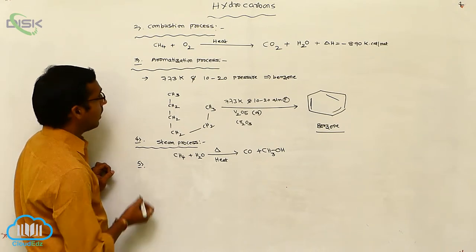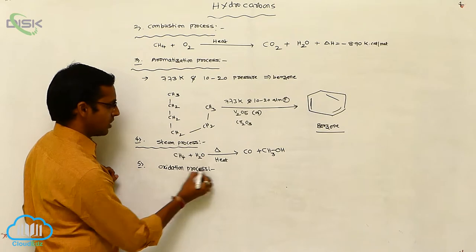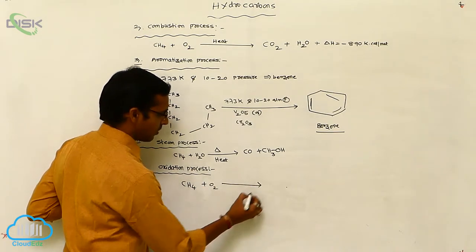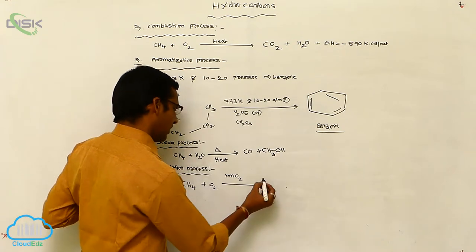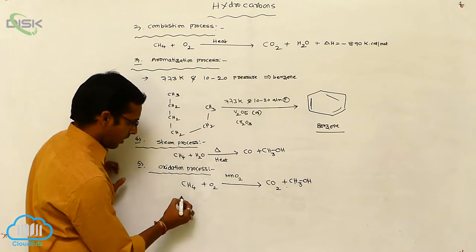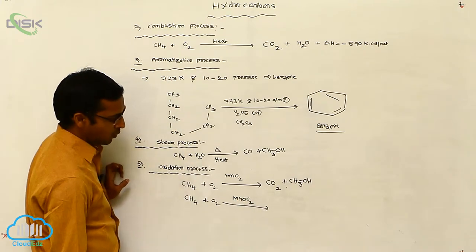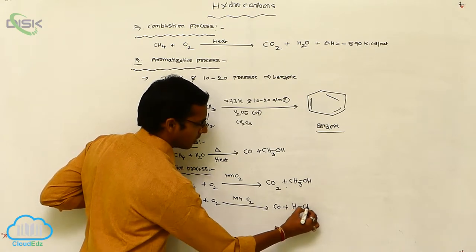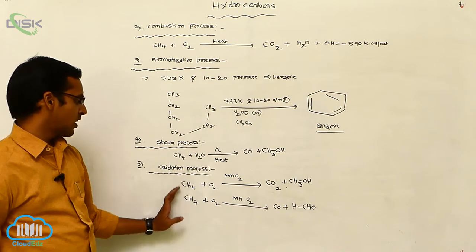Next, alkanes undergo the oxidation process. In the oxidation process, methane undergoes oxidation in the presence of MnO2 — manganese oxide — and it gives carbon dioxide and methanol (CH3OH). Also, methane in the presence of oxygen and MnO2 gives carbon monoxide and formaldehyde. So during the oxidation process, different types of products are formed.